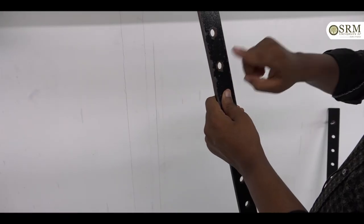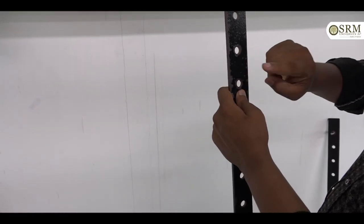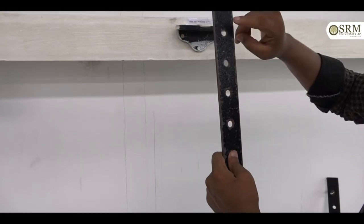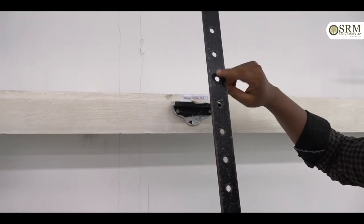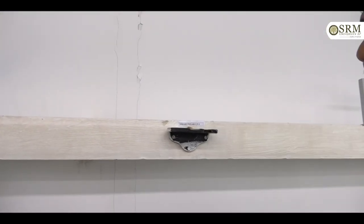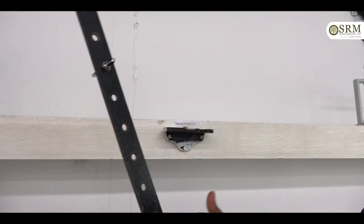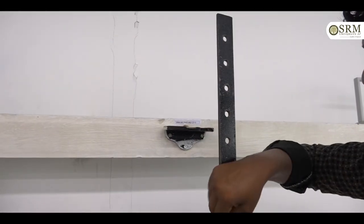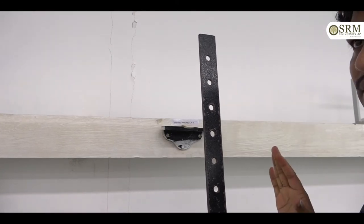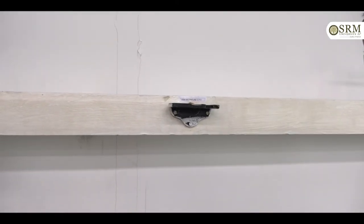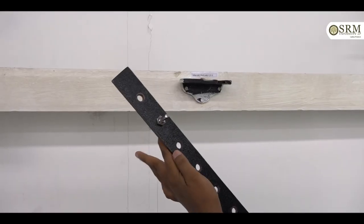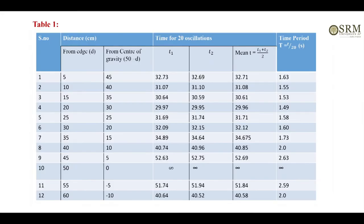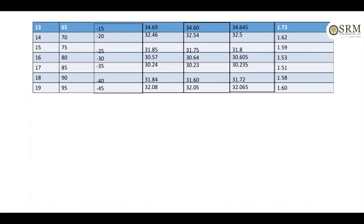After reversing the pendulum, readings are taken at 55, 60, 65, 70, 75, 80, 85, and 90 centimeters — that means 5 to 45 downwards, then reverse the pendulum and take 55 to 95 upwards. Repeat the same process: find out the time for 20 oscillations of each hole, find the mean, then find out the time period of each hole.